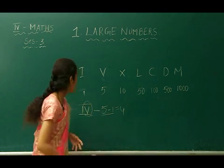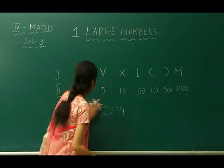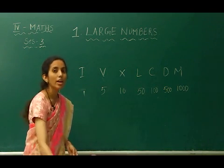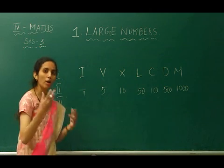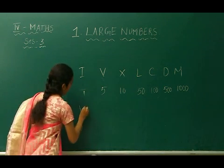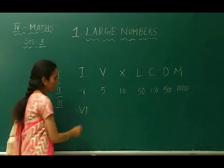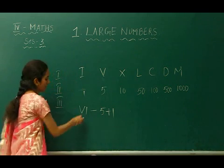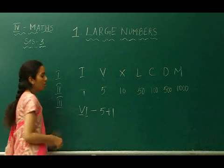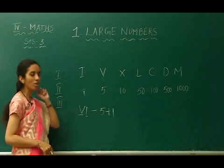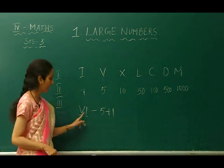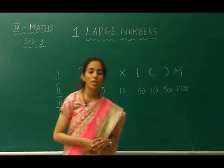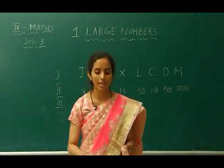If a number is added on the right side of the bigger number, it indicates addition — just like 6. VI means 5 plus 1. The symbol V is 5 and I is 1, so V plus I equals 6. Even though we do not write the plus symbol here, VI conveys that this is 5 plus 1. These are the rules for writing Roman numbers.